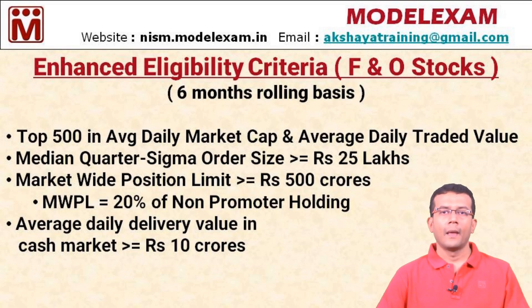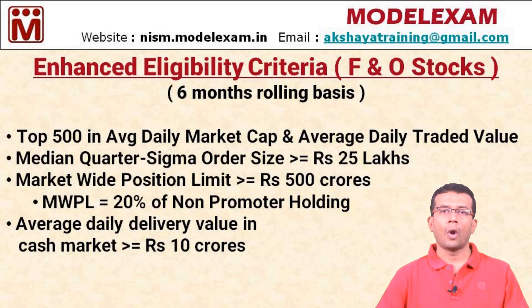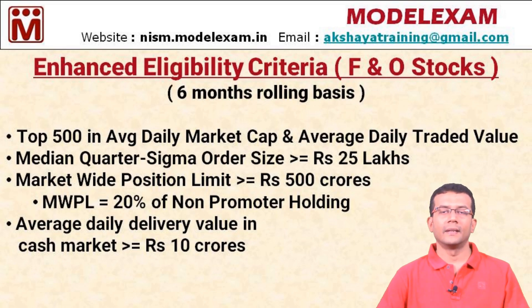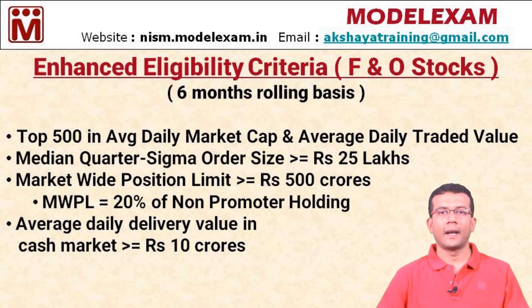The third condition is that the market-wide position limit (MWPL) should be at least 500 crores. MWPL is 20% of the non-promoter holding, otherwise called the free float. The fourth condition is that the average daily delivery value in the cash market should be at least 10 crores. This is a new criterion added as part of the enhanced eligibility criteria — cash market trading is also taken into account to bring a stock into the F&O segment.